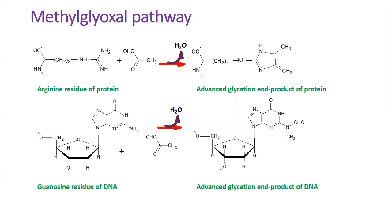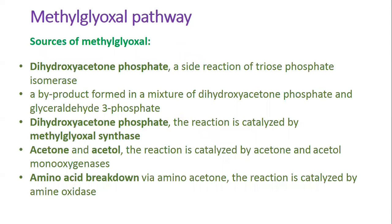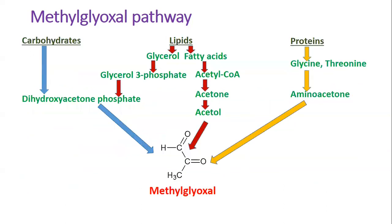Methylglyoxal is thought to have several potential routes of synthesis. First, it forms spontaneously from dihydroxyacetone phosphate as a side reaction of triosephosphate isomerase. It can be a byproduct formed in a mixture of dihydroxyacetone phosphate and glyceraldehyde-3-phosphate. Then, it can be synthesized from dihydroxyacetone phosphate in a reaction catalyzed by methylglyoxal synthase.